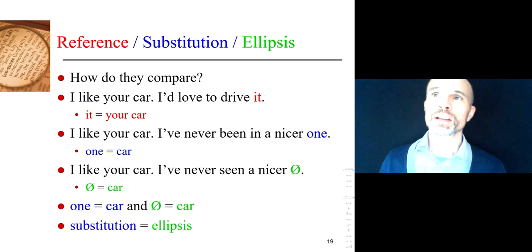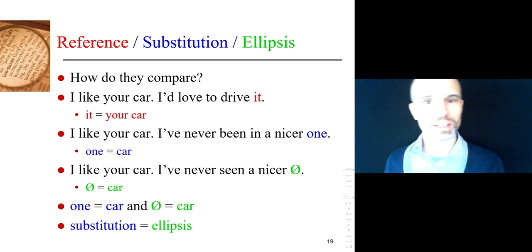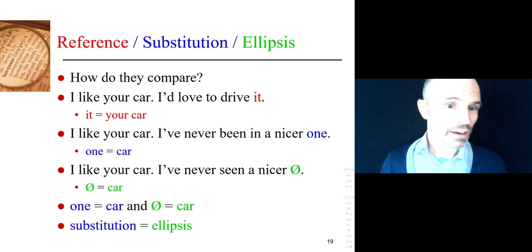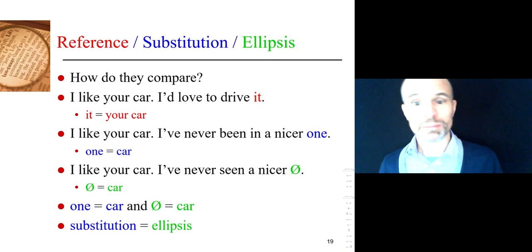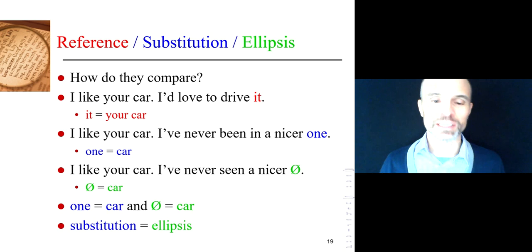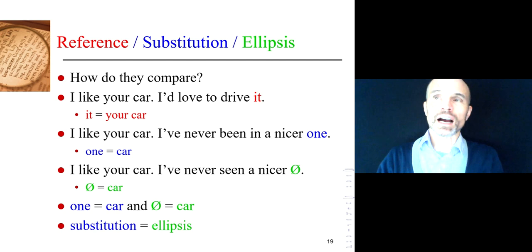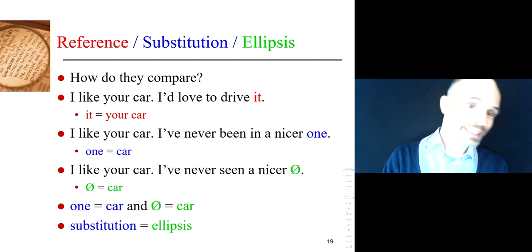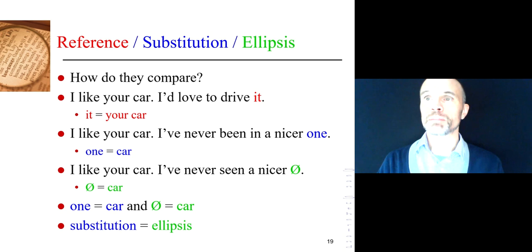'I like your car. I've never seen a nicer car' — you're doing the same thing as substitution, except instead of using the word 'one,' you're leaving the word 'car' out but expecting it to be understood. That's why the very first slide said substitution and ellipsis are the same: they both have the property of repudiation we talked about with substitution. With ellipsis, you're not talking about the same car again — I'm talking about cars I've seen and comparing them to your car. Substitution and ellipsis are the same in that you're not talking about the identical item as in reference.